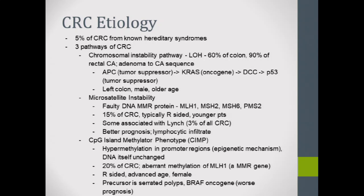The second pathway is microsatellite instability — a faulty MMR protein. Key proteins: MLH1, MSH2, MSH6, PMS2. These tumors are typically right-sided, in younger patients. Some are associated with Lynch syndrome, which represents 3% of all colorectal cancer. Stage for stage, these actually have a better prognosis, and pathologically you can see a Crohn's-like reaction or lymphocytic infiltrate on MSI-unstable tumors.